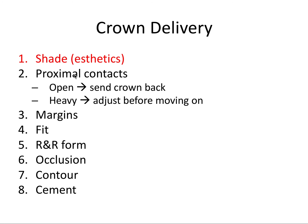Then you check the proximal contacts, both on the cast and in the patient's mouth. The reason you check this first is that if a proximal contact is open, you have to send that crown back for adjustment, because an open space between the crown and the adjacent tooth will leave a food impaction site — food will constantly get caught there, which is a treatment failure. Additionally, if the proximal contact is too heavy, the crown won't seat all the way and needs to be adjusted until it seats fully.